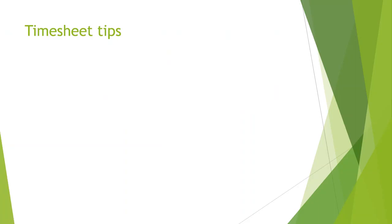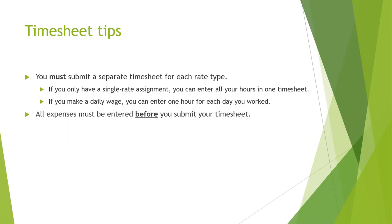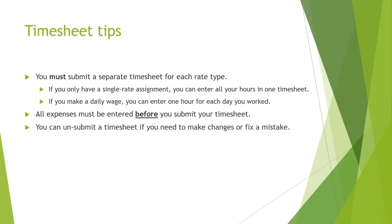Now let's go over some helpful tips. First, you must submit a separate timesheet for each rate type. If you only have a single rate assignment — let's say you earn a flat hourly wage — you can enter all your hours in that one timesheet; otherwise you'll need to submit a separate timesheet for each rate. You can consult the rate sheet that you signed for your assignment to know how to break your time out. But if you make a daily wage you can simply enter one hour for each day you worked. Also note that your expenses and your timesheet are linked, so you must enter all expenses before you submit your timesheet. But if you make any mistakes or leave any expenses out you can easily unsubmit a timesheet and make the changes you need to make.